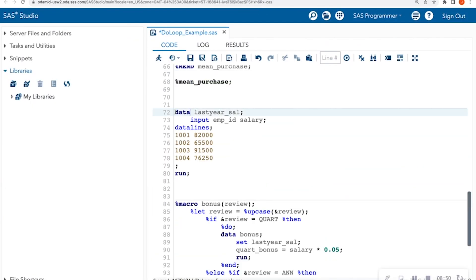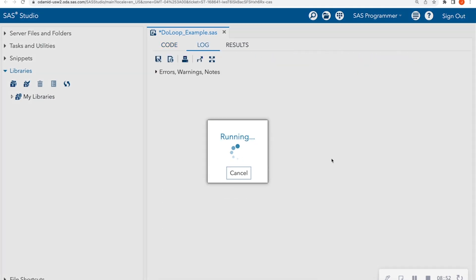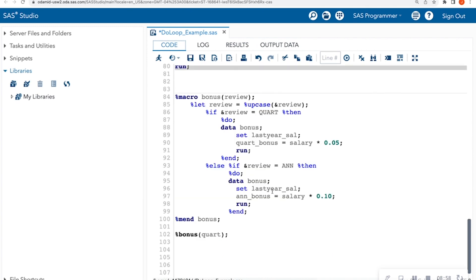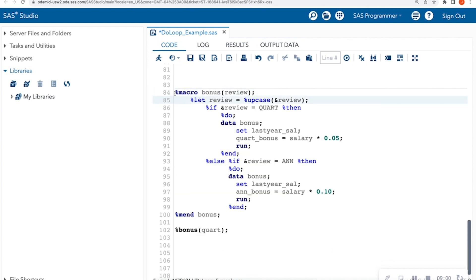So once again, I have my last year salary data just for funds, that we have employee IDs and their corresponding salary. And here's my macro program. And as always, I always start with creating the name of the macro program and what the input needs to be. And then closing it with a percent mend. Everything else goes in between. So in this case, I am making sure that regardless of what case that you put your answer in or your argument in, it's going to change it to upcase. So I'm going to force everyone's answer to be standardized.